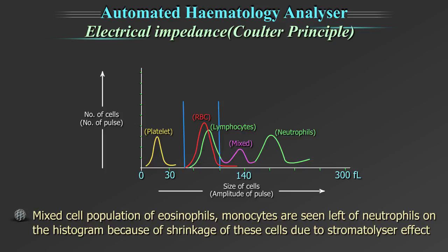However, the mixed cell population of eosinophils and monocytes are seen to the left of the neutrophils on the histogram, because of the shrinkage of these cells due to the stomatolyzer effect.